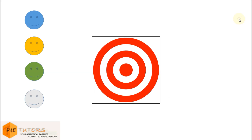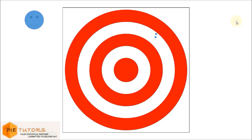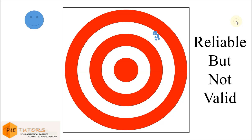Consider a situation where there are four people required to fire bullets at the center of a dartboard. The first person fires all his bullets and it is observed that all his bullets hit at some distance from the center. The firing consistency for this person is high but the firing accuracy is low. This scenario is analogous to a reliable but invalid measure.